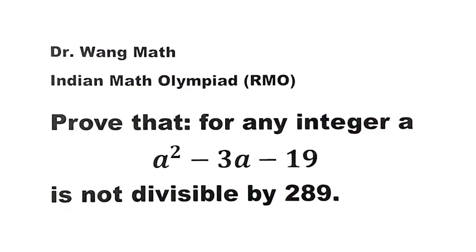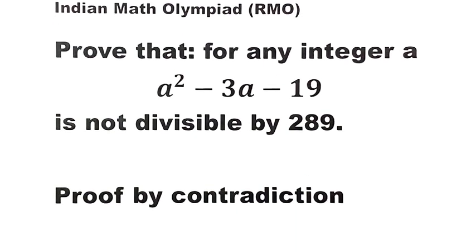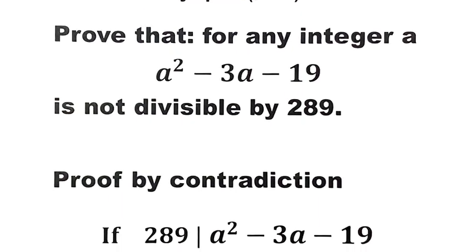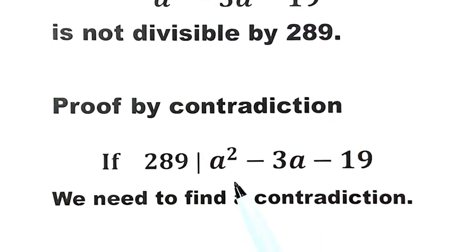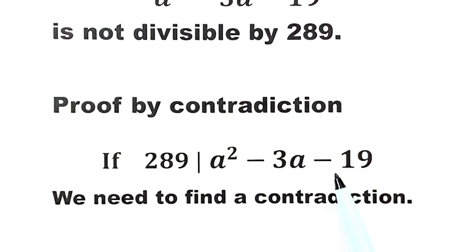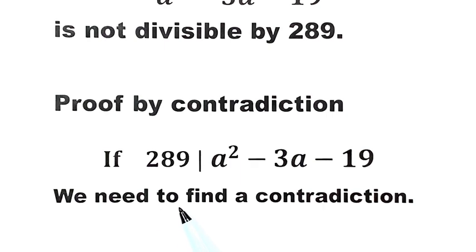How do we prove it? We'll use a popular method called proof by contradiction. The idea is: if we assume a squared minus 3a minus 19 is divisible by 289, then we need to find a contradiction. Now let's get started.